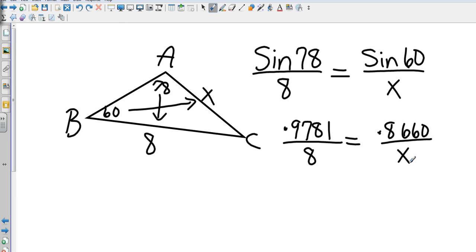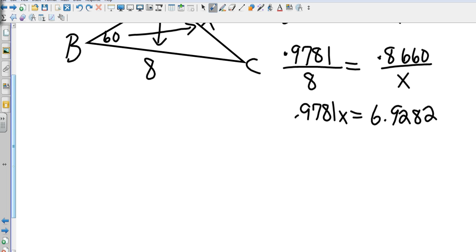What's going to happen is I'm going to multiply that 0.8660 times 8, and that's going to give me 6.9282. And then I'm going to cross multiply that 0.9781 times X, and so that leaves me a final step of dividing both sides by 0.9781.